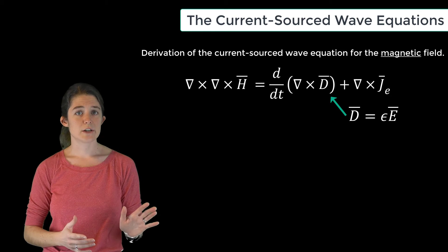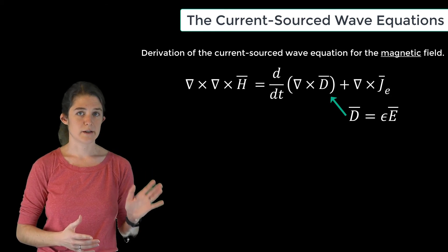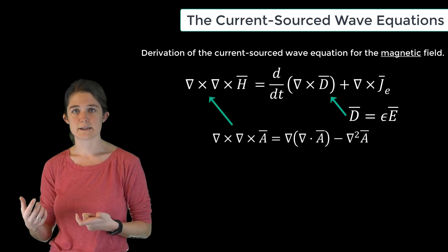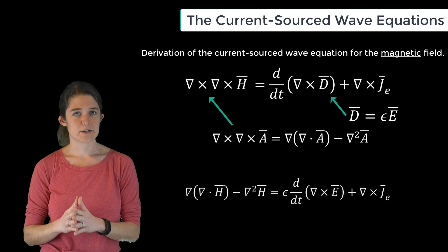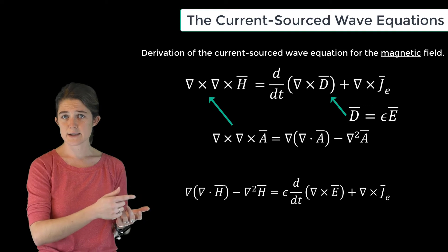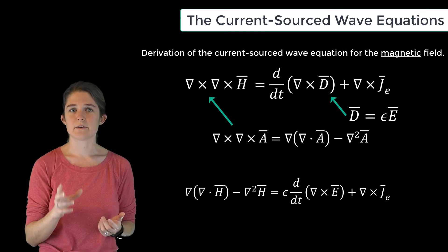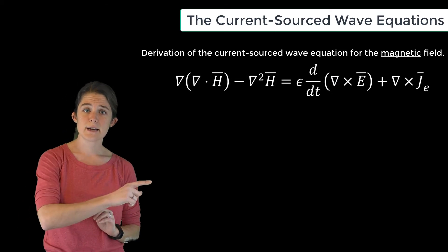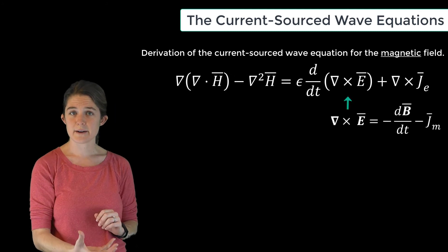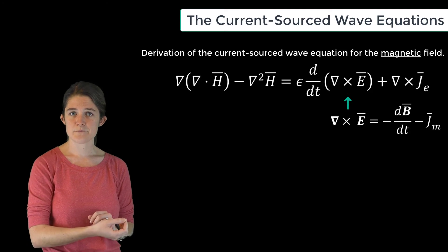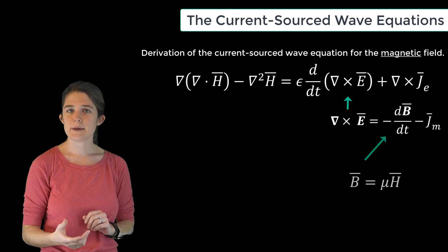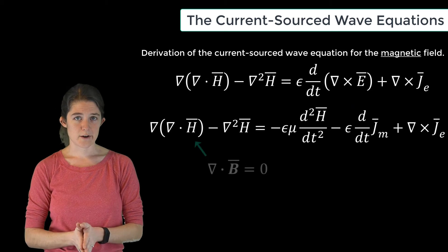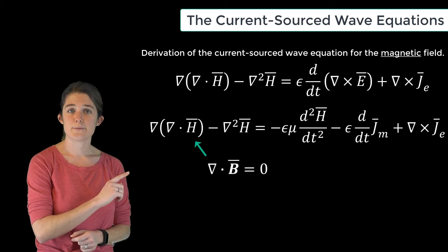We can then apply the constitutive relation for D so that it becomes epsilon E, and we can apply the vector identity — the curl of a curl of a vector equals the gradient of the divergence minus its Laplacian — to show that the gradient of the divergence of H minus the Laplacian of H equals epsilon times the time derivative of the curl of E plus the curl of j sub e. On the right-hand side we have the curl of E, which by Faraday's law equals negative dB/dt minus j sub m, so we can plug that in. And we also know that B equals mu H from the constitutive relation.